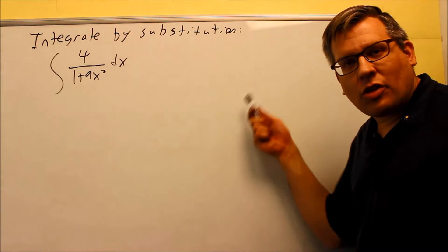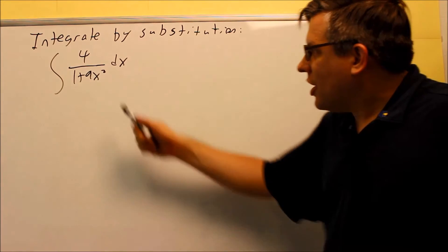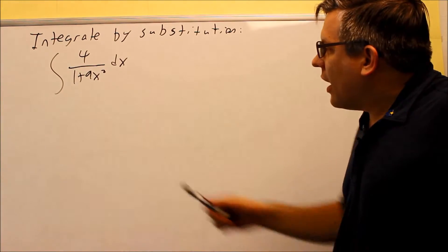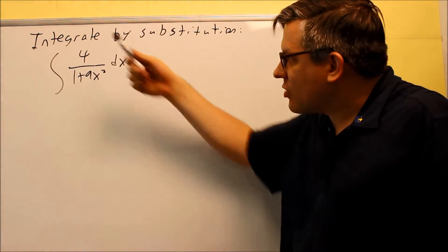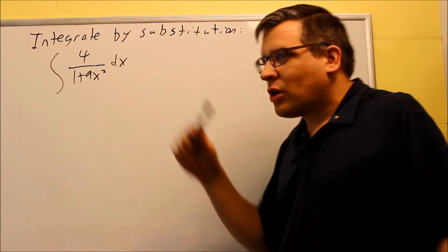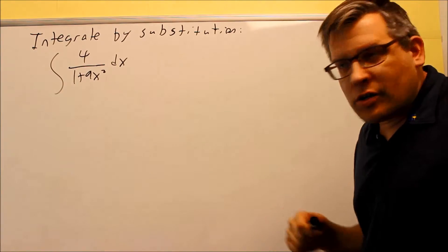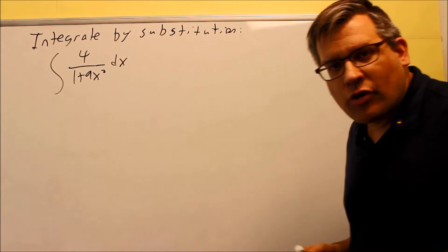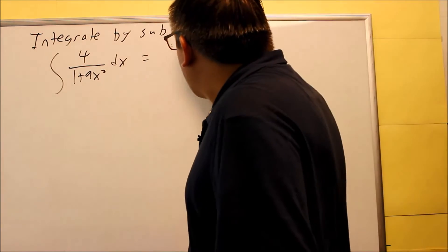This problem looks a little bit different than the ones we've done before. If you try and attempt to let u equal the bottom and take the derivative, you're not going to be able to cancel out the top. So this is actually a problem that requires a little bit of a different approach, and this approach is going to involve inverse trig functions.